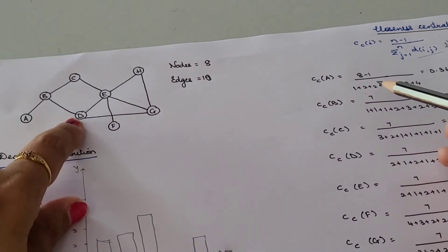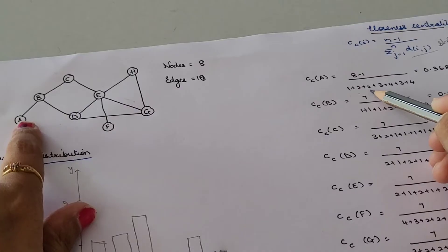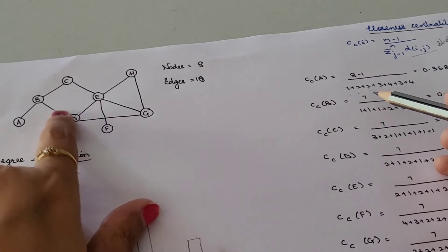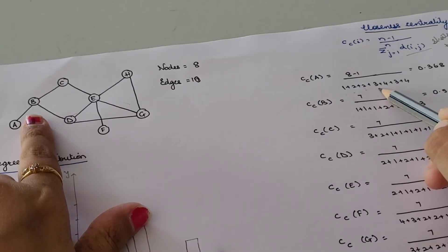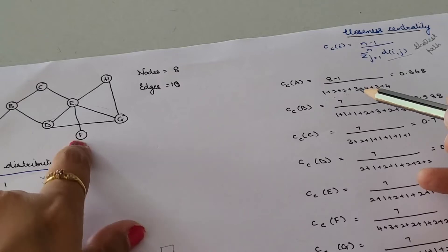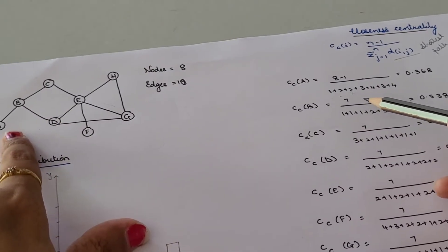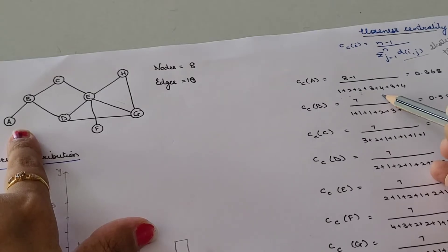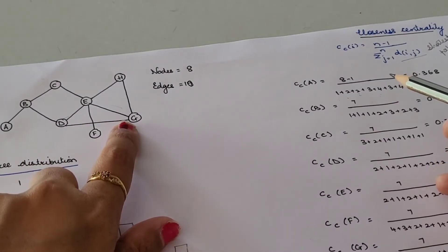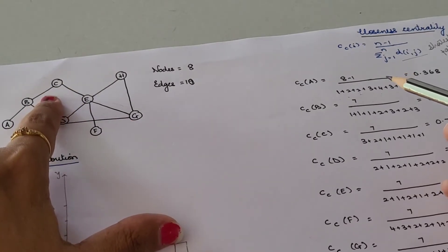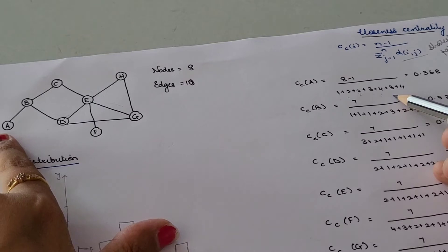From node D, you go D to B to A — that is 2 edges, so we write 2. From E, you can go either D-B-A or C-B-A — both are shortest paths consisting of 3 edges, so we write 3. From F, you have E-C-B-A or E-D-B-A — that consists of 4 edges, so we write 4. For G, you have E-C-B-A or E-D-B-A — all consist of 3 edges, so we write 3.